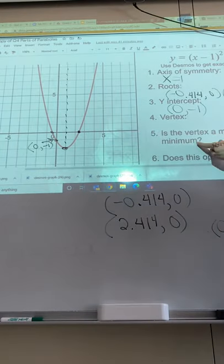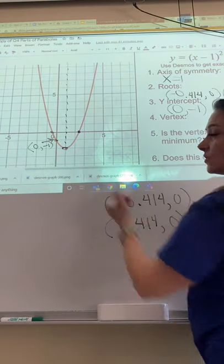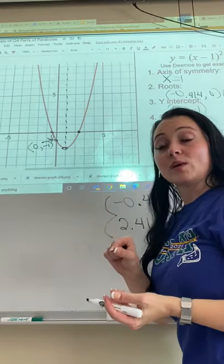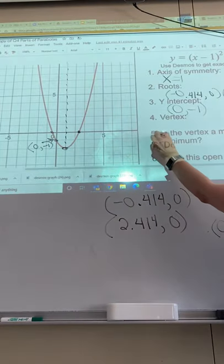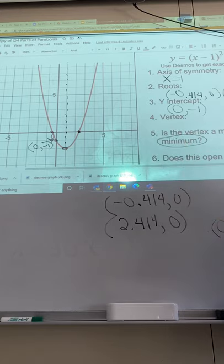Is the vertex a maximum or minimum? So it is a minimum. So it's a minimum if it's ever the lowest point, which it is in this case. So you can either highlight it or type it out. Does it open up or down? It opens up.